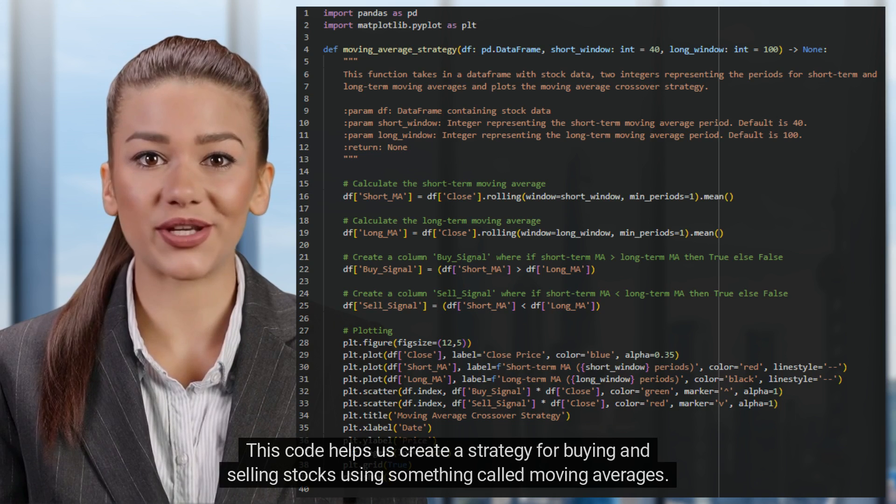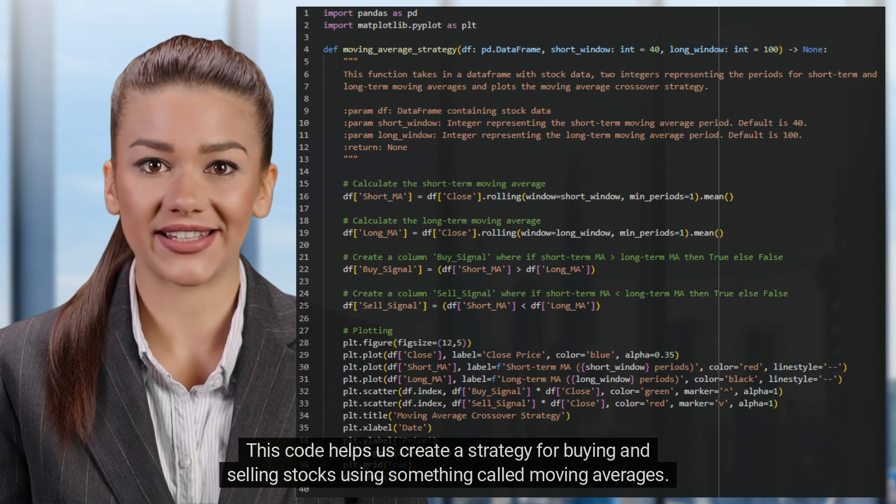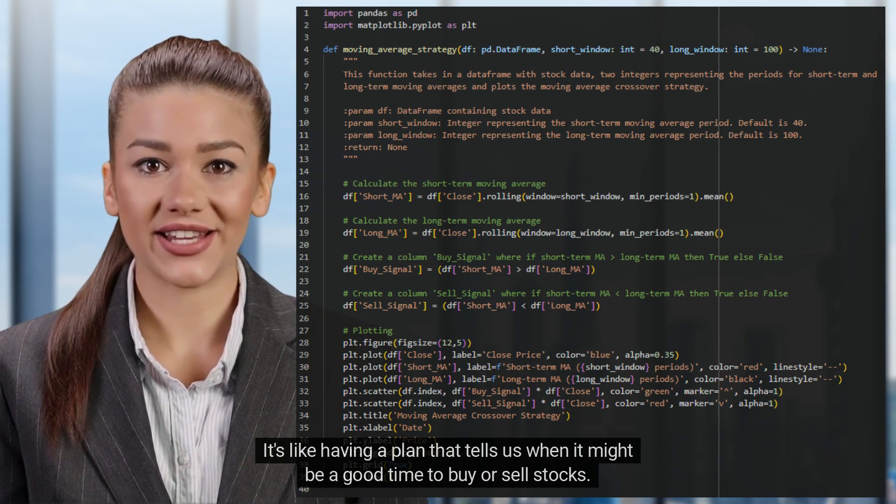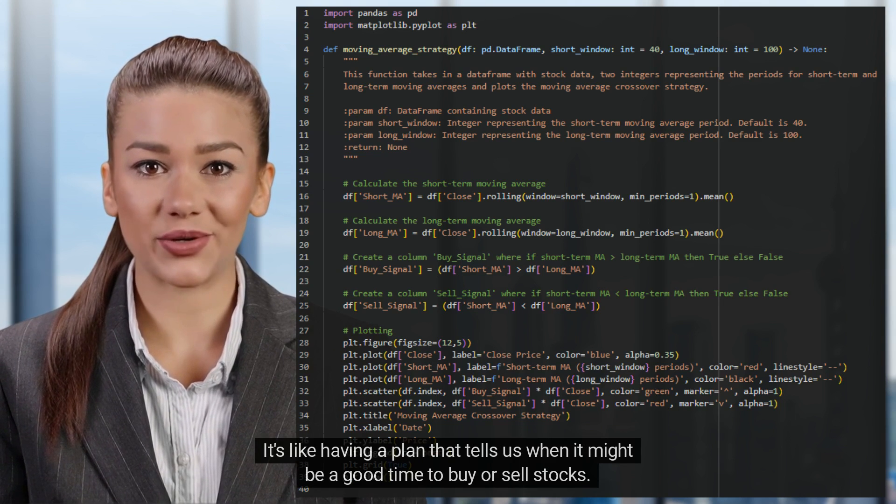This code helps us create a strategy for buying and selling stocks using something called moving averages. It's like having a plan that tells us when it might be a good time to buy or sell stocks.